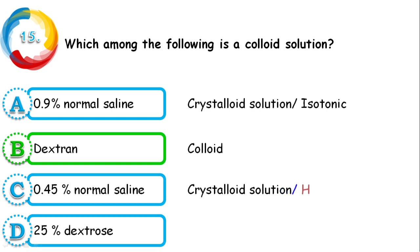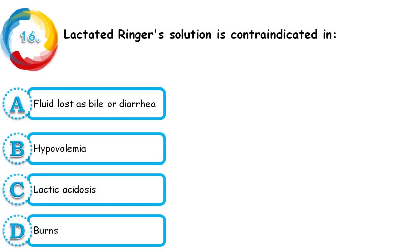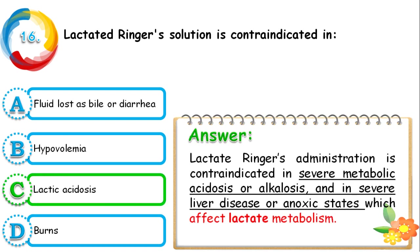Question 16: Lactated Ringer's solution is contraindicated in — fluid loss as bile or diarrhea, hypovolemia, lactic acidosis, or burns? The correct answer is lactic acidosis. Lactated Ringer's administration is contraindicated in severe metabolic acidosis or alkalosis, severe liver disease, or anoxia states that affect lactate metabolism, so we won't administer it during these periods.